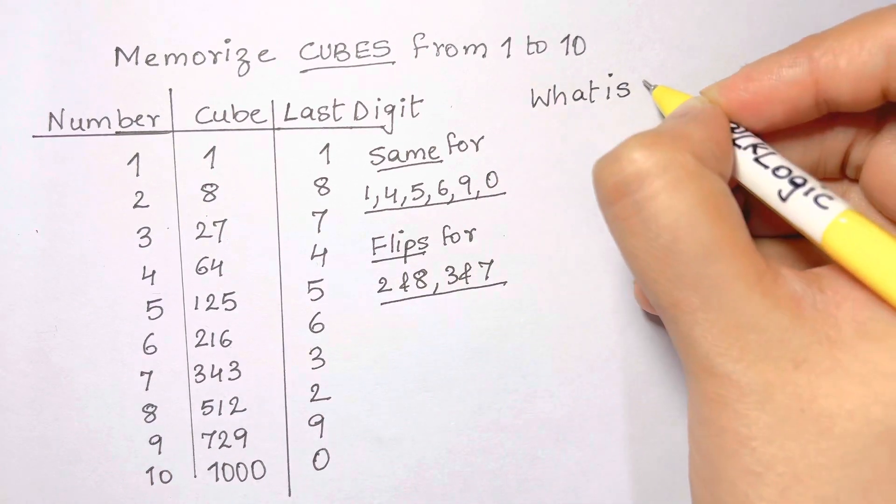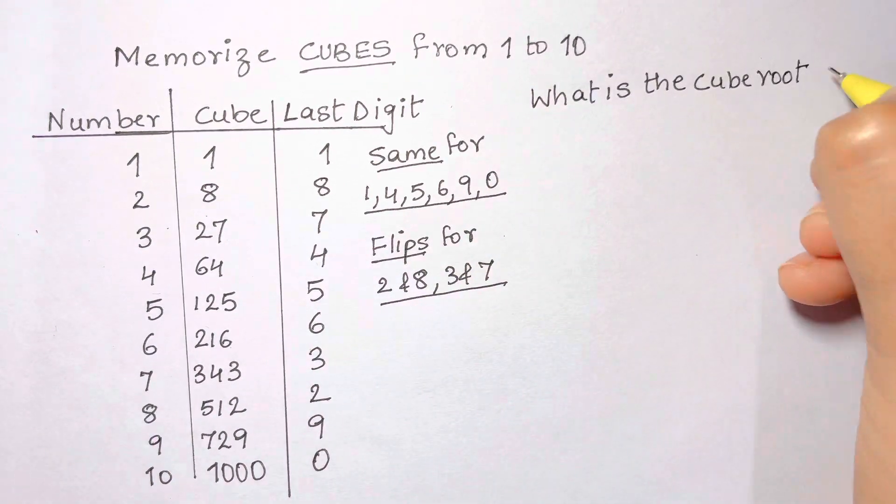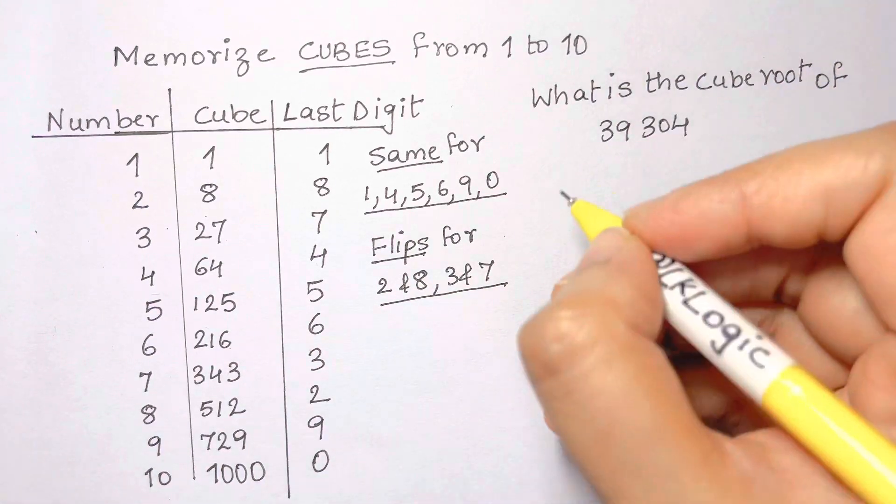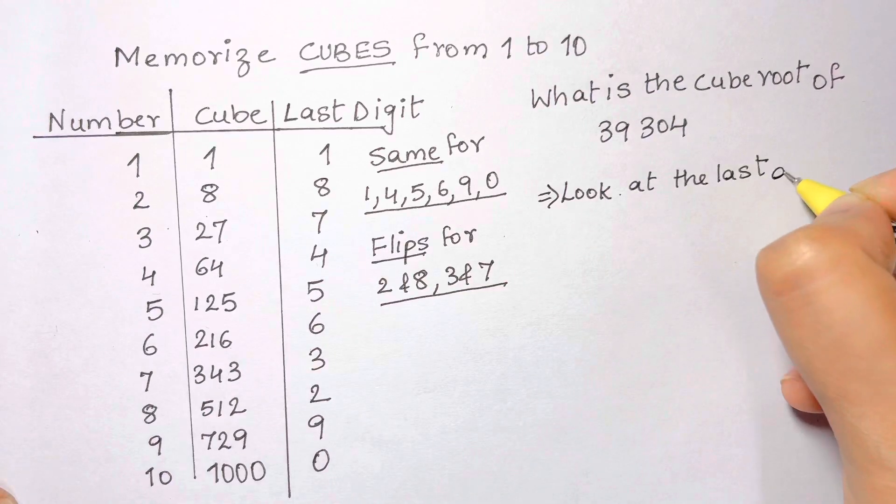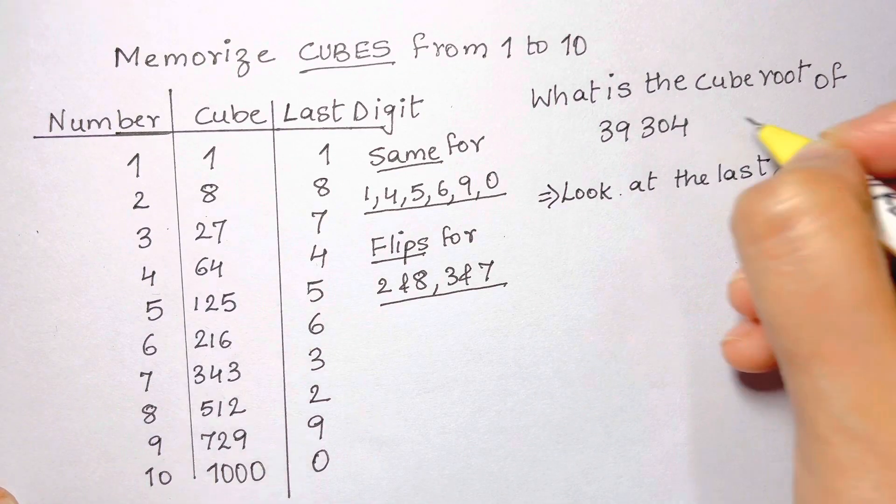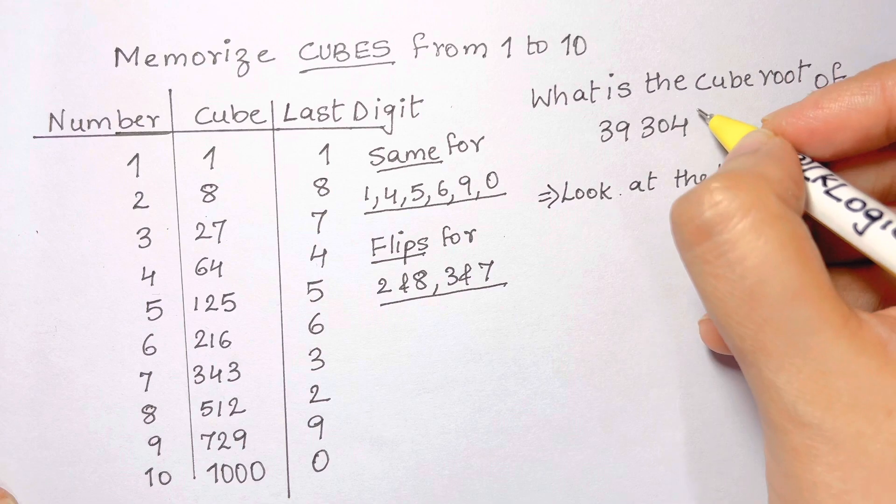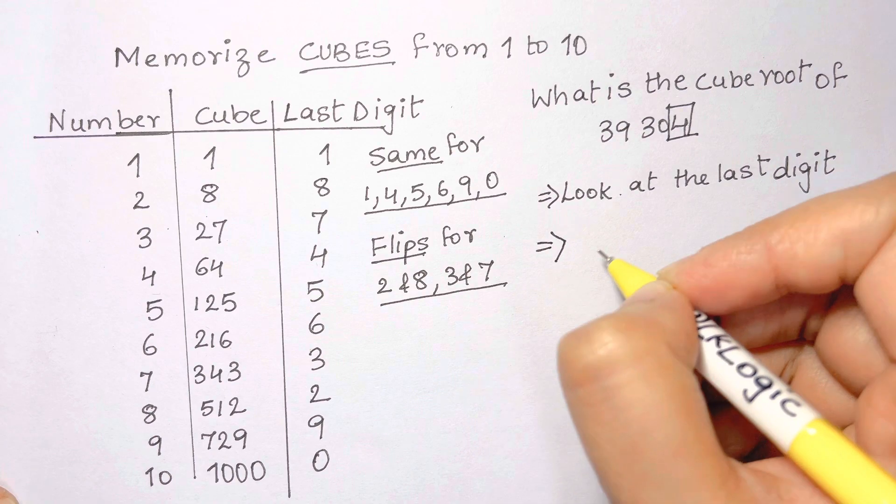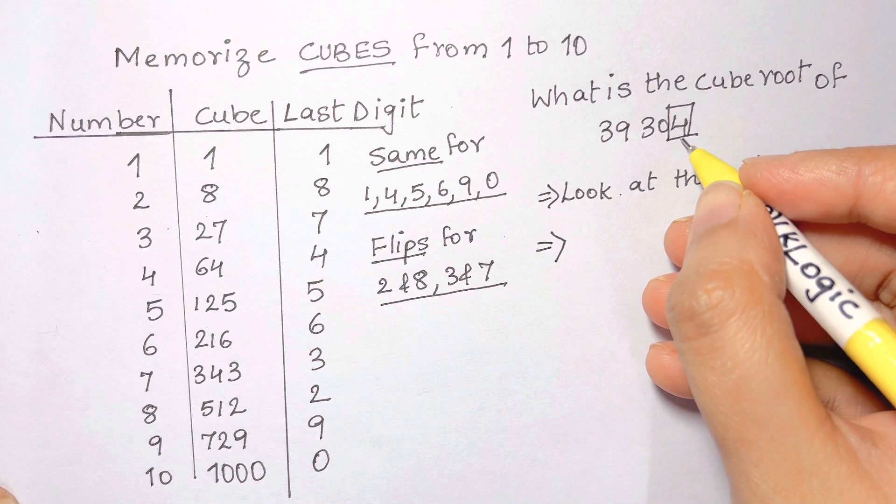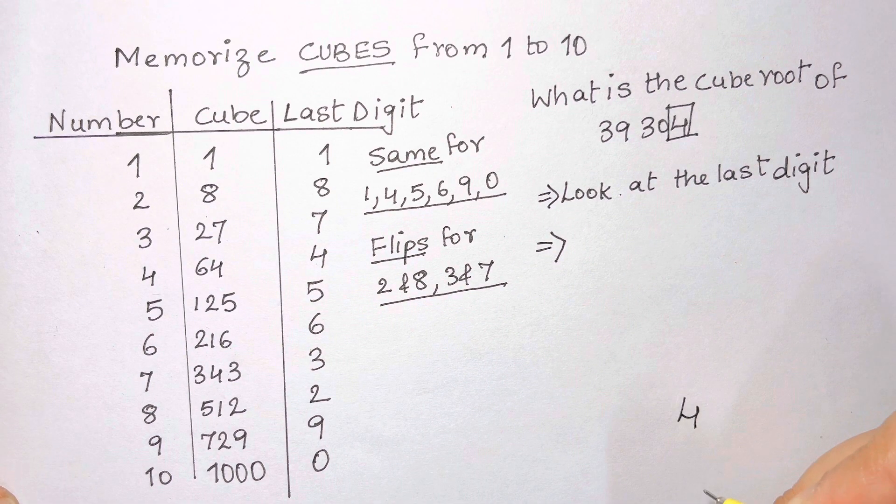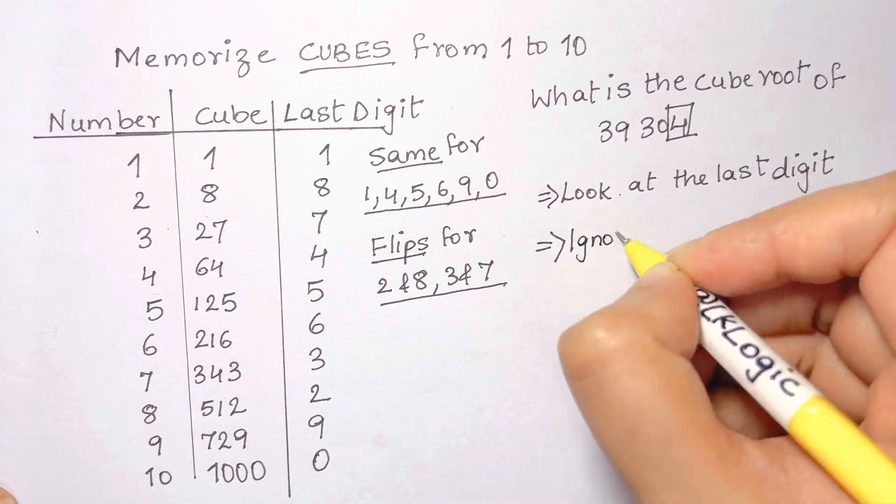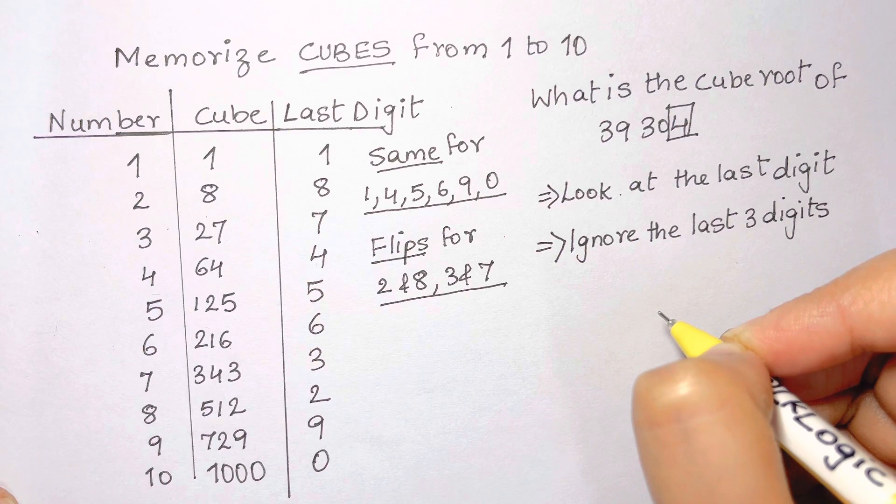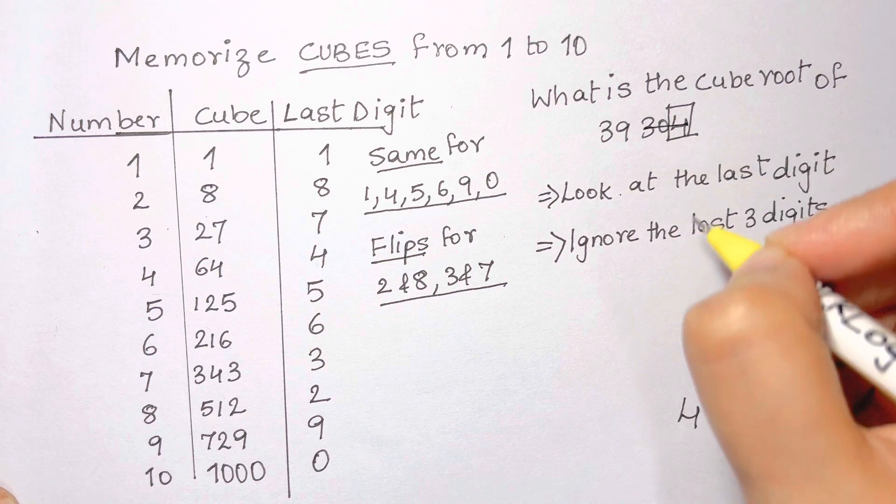So let's do the trick. What's the cube root of 39,304? The first thing I want you to do is look at the last digit. The last digit of 39,304 is 4, which we are going to put in the box. So we look up 4 in the last digit and that corresponds to the number 4, so we write down the number 4.